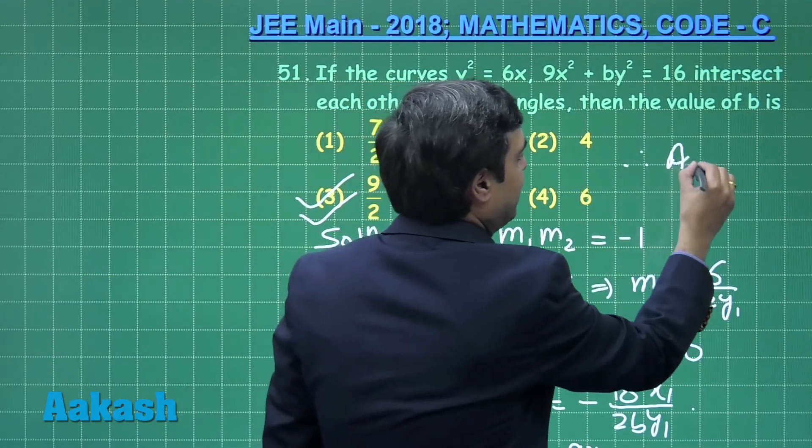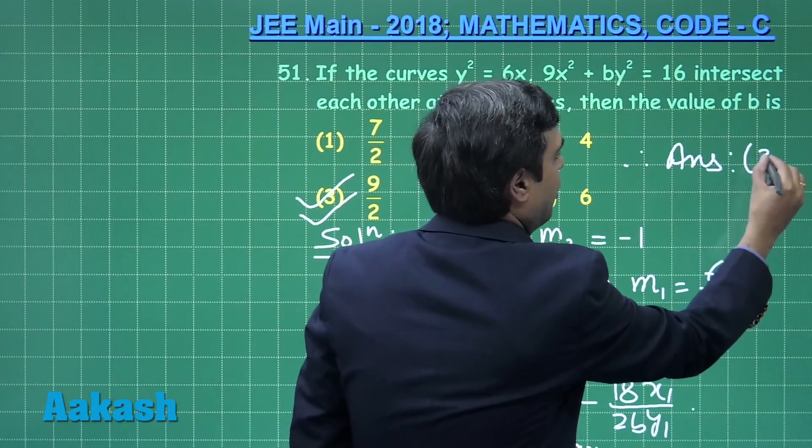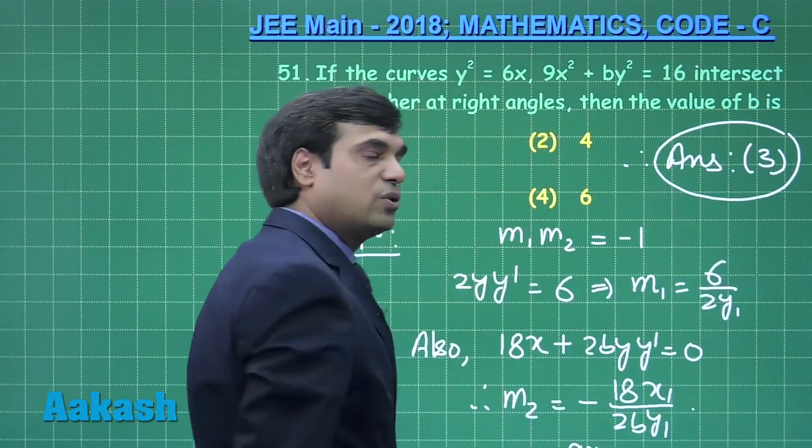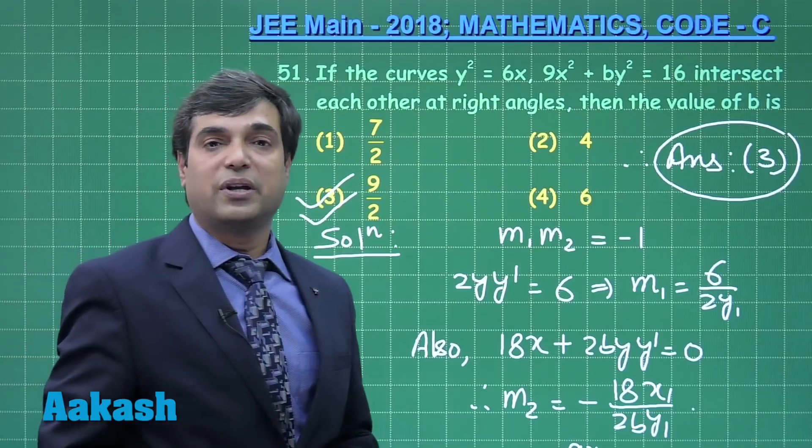We get the value for b as 9/2, and we see that 9/2 meaning option 3. Therefore, the correct answer is option 3. This question is clear. Moving to the next question.